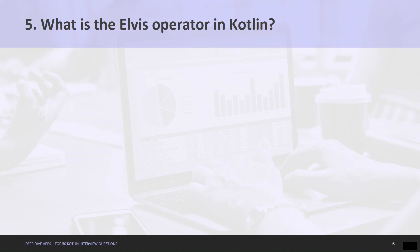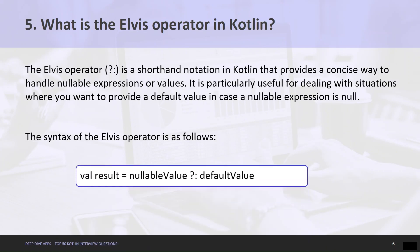Question 5: What is the Elvis operator in Kotlin? The Elvis operator is a shorthand notation in Kotlin that provides a concise way to handle nullable expressions or values. It is particularly useful for dealing with situations where you want to provide a default value in case a nullable expression is null. In the given example, if the nullable value is null, the default value will be passed to the result variable.